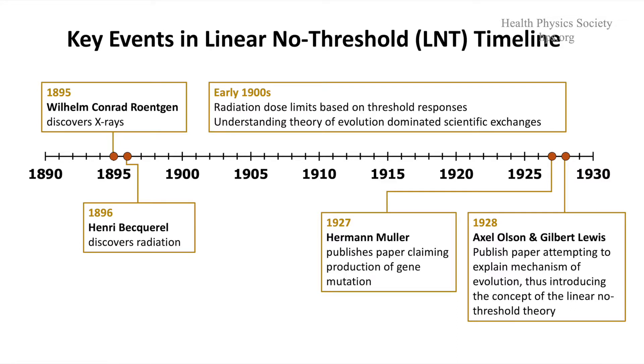Coming after Darwin with his book in 1865, and then Gregor Mendel with regards to genetic separation of traits, researchers were looking at how biological changes took place. They knew there were genes located on chromosomes, but how did it actually take place? There was a race to figure this out, and Muller was in that race when he was a graduate student at Columbia. That race started around 1910.